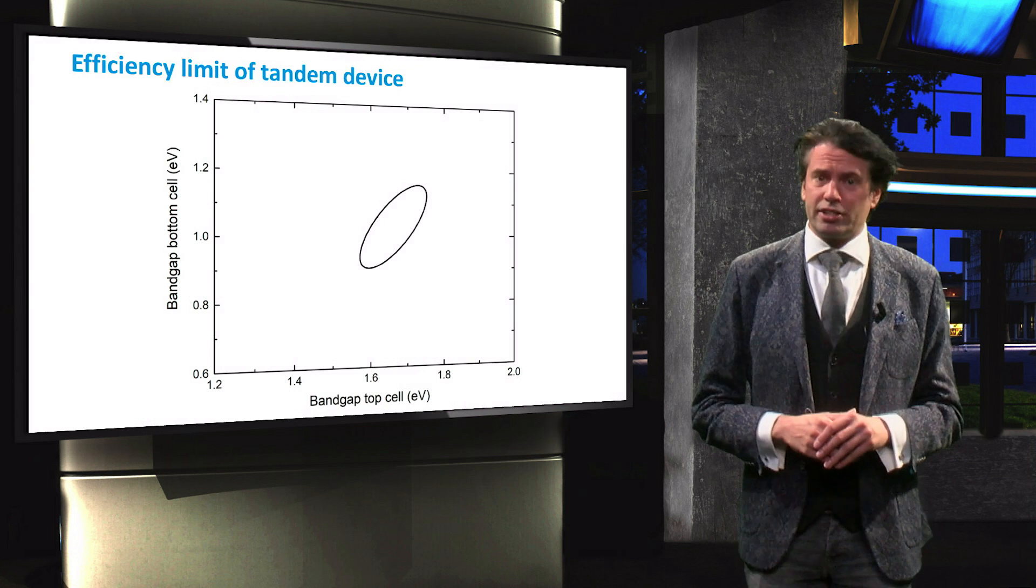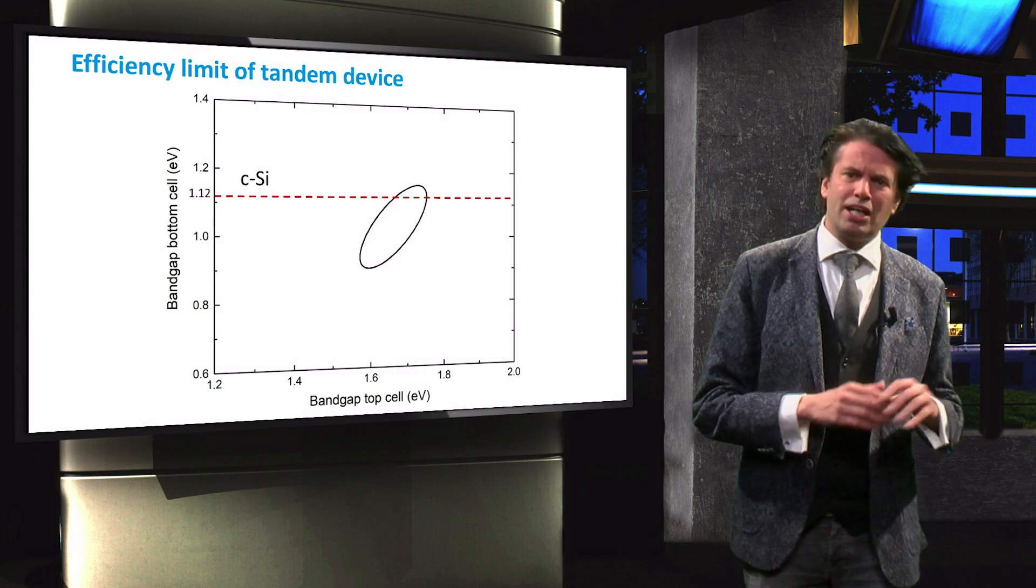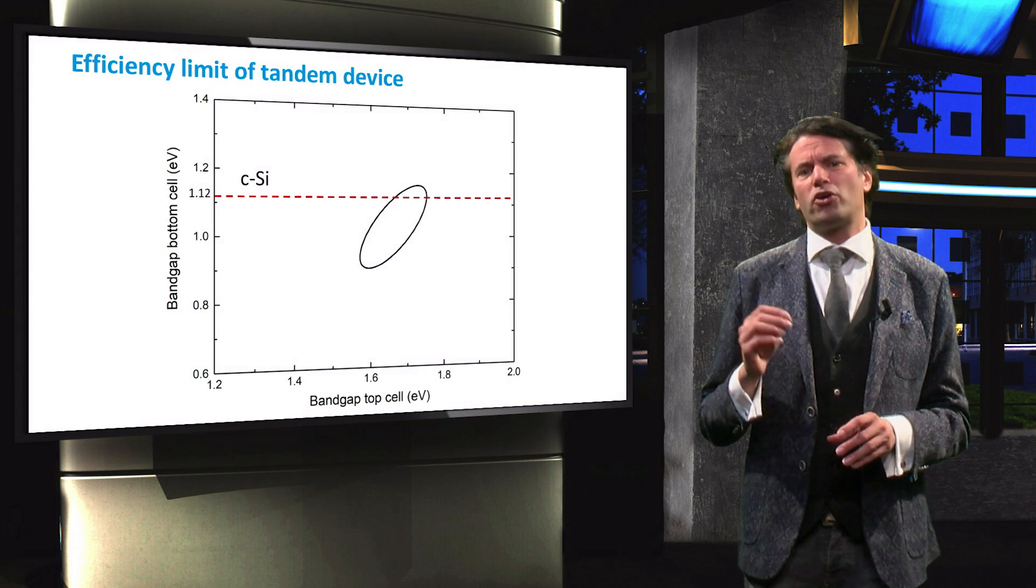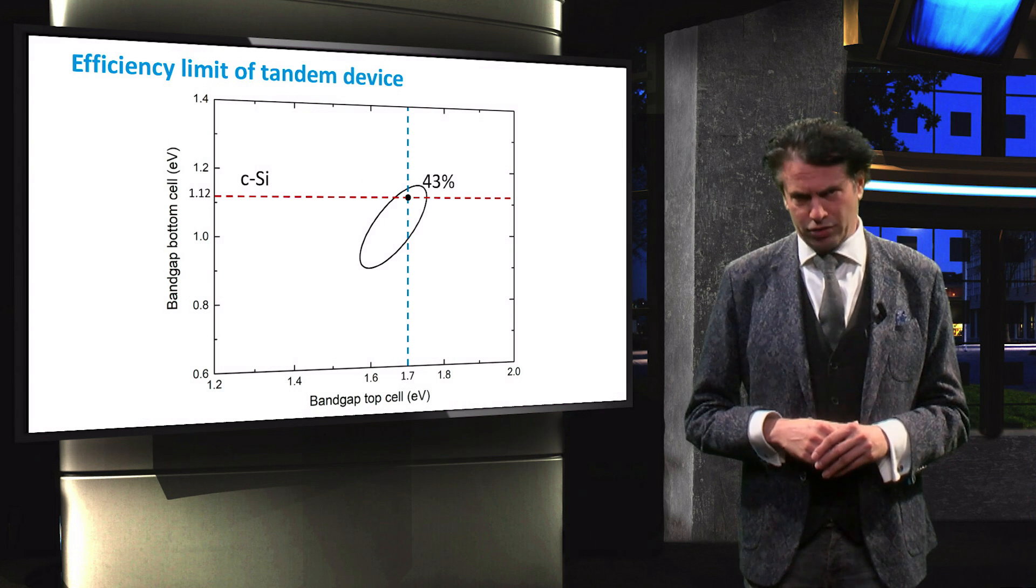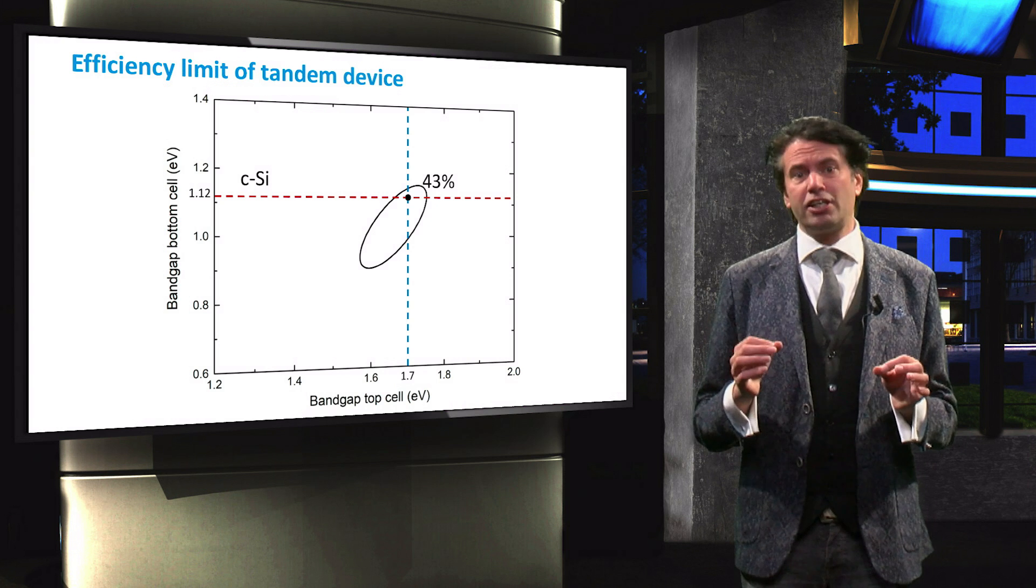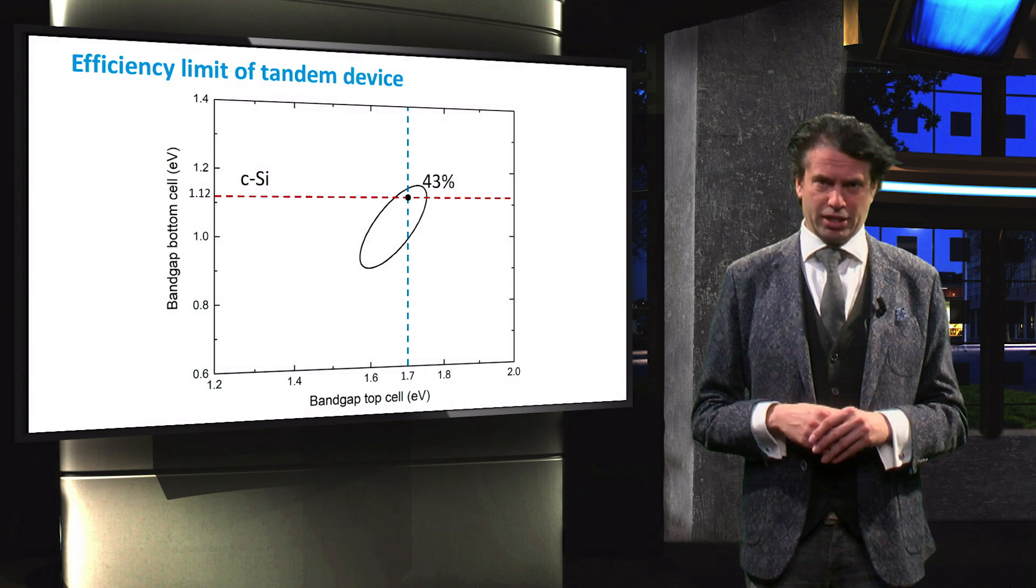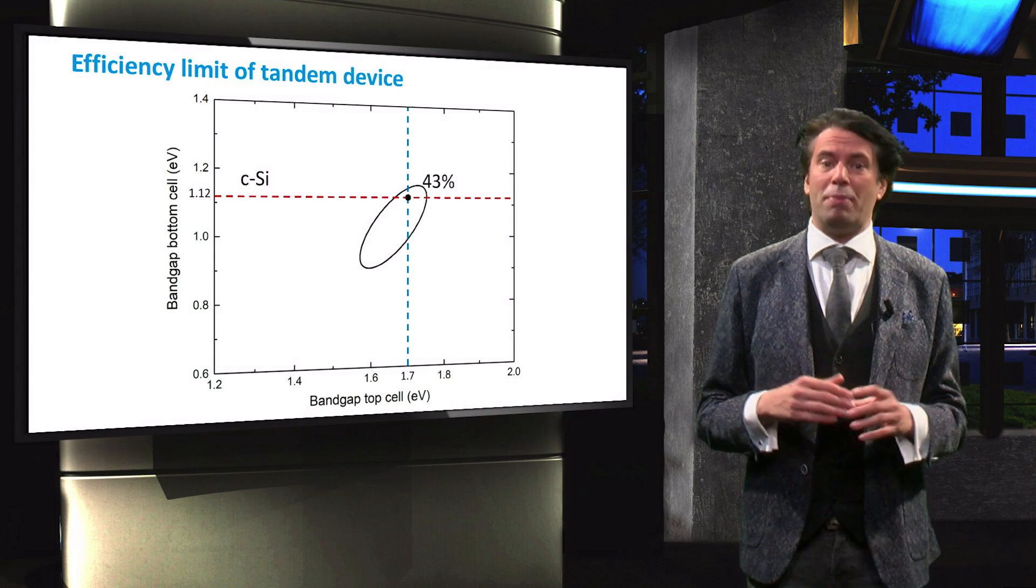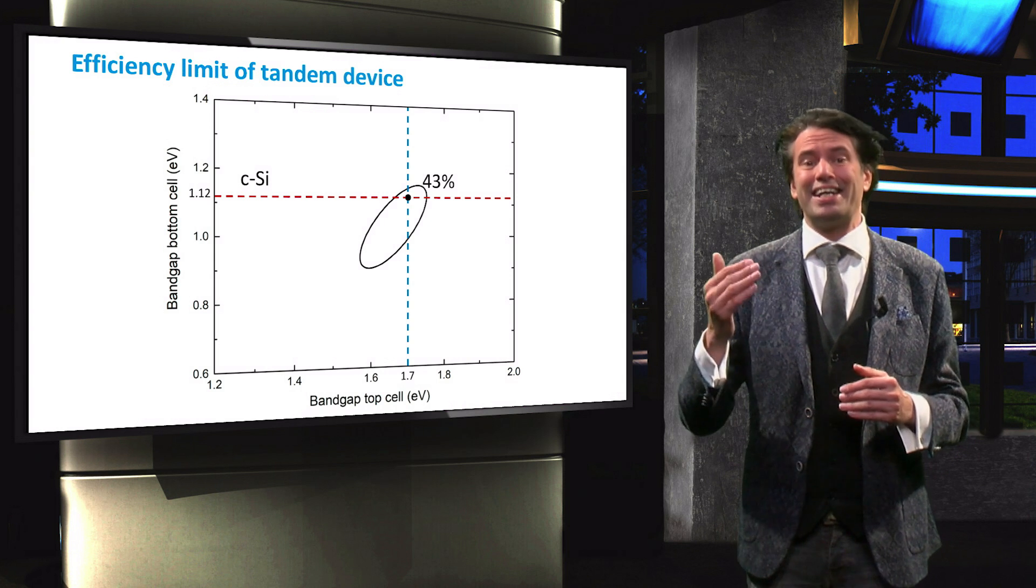In case crystalline silicon is used as a bottom cell in a tandem device, the optimal bandgap of the top cell is approximately 1.7 eV. The efficiency limit for such a device is about 43%. In the case of a four terminal device, the optimal bandgap of the top cell is slightly higher.